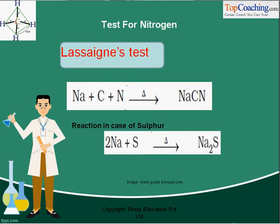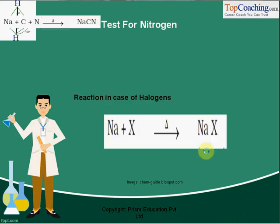Let us say the compound had nitrogen in it. Since it is an organic compound it will also have carbon, so when its sodium fusion extract is formed we get sodium cyanide (NaCN). This is the first step towards identifying the element in the organic compound. In the case of sulfur, sulfur reacts with sodium on heating to give Na₂S. In the case of halogens, we get sodium halide.